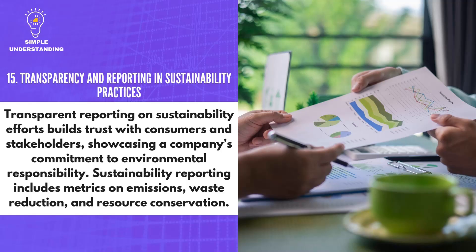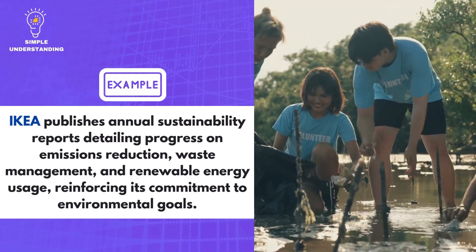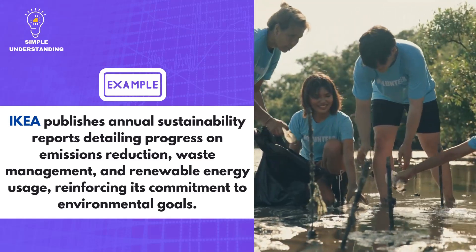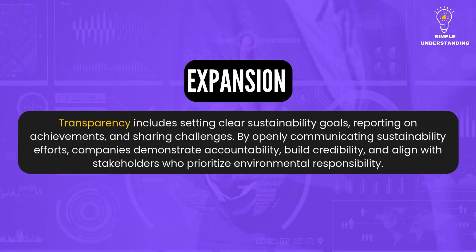15. Transparency in Reporting Sustainability Practices. Transparent reporting on sustainability efforts builds trust with consumers and stakeholders, showcasing a company's commitment to environmental responsibility. Sustainability reporting includes metrics on emissions, waste reduction, and resource conservation. IKEA publishes annual sustainability reports detailing progress on emissions reduction, waste management, and renewable energy usage, reinforcing its commitment to environmental goals. Transparency includes setting clear sustainability goals, reporting on achievements, and sharing challenges, demonstrating accountability and building credibility.